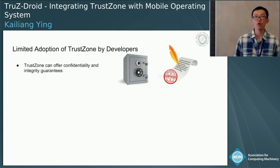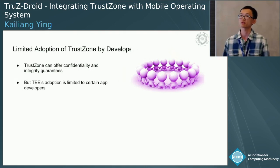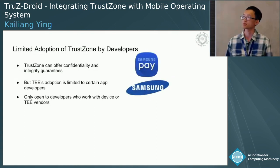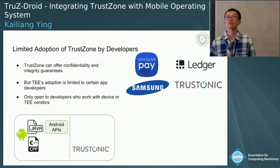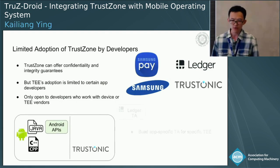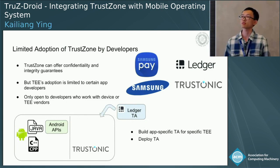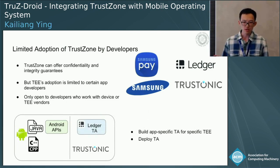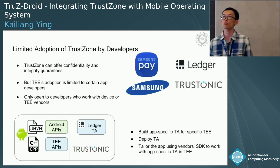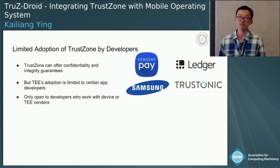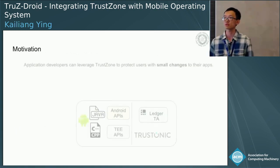Given that TrustZone offers so many security measures, the current adoption rate is only limited to certain app developers — those who own the devices like Samsung, or those who work with TEE vendors like the Bitcoin ledger. To briefly introduce what kind of effort developers currently need to take: first, they have to build application-specific TAs that work with a particular vendor; then they have to use the messaging the vendor provides to deploy that TA; and the application in the normal world also requires changes using the vendor SDK to work with the logic inside the secure world.